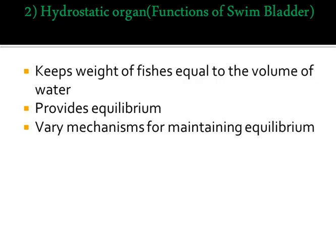The gas bladder of a fish also acts as a hydrostatic organ — it is primarily a hydrostatic organ. It helps to keep the weight of the body equal to the volume of water the fish displaces, and serves to equilibrate the body in relation to the surrounding medium by increasing or decreasing the volume of gas content. In physostomous fishes, expulsion of gas from the swim bladder occurs via the ductus pneumaticus, while in physoclistous fishes the ductus pneumaticus is absent and superfluous gas is removed by diffusion.